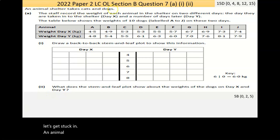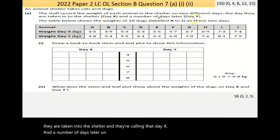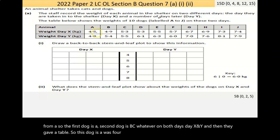An animal shelter takes cats and dogs. The staff record the weight of each animal in the shelter on two different days. The day that they are taken into the shelter, they're calling that day X, and a number of days later, they're calling that day Y. The table shows the weights of 10 dogs, labeled from A through J on both days, day X and day Y. Dog A was 4.5 kilograms arriving, and then increased its weight to 4.8 after whatever number of days.